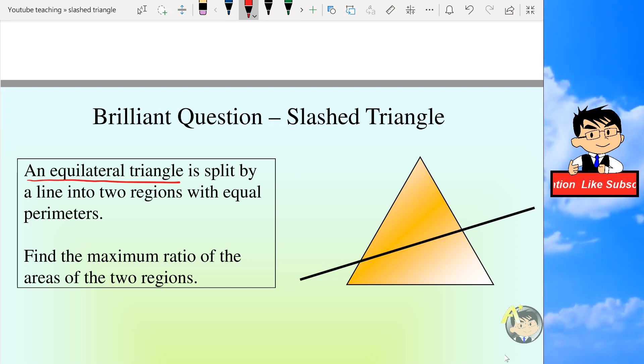There's an equilateral triangle which is split by a line into two regions with equal perimeters. Find the maximum ratio of the areas of the two regions. So the two regions are the upper part, this triangle, and the quadrilateral below it.